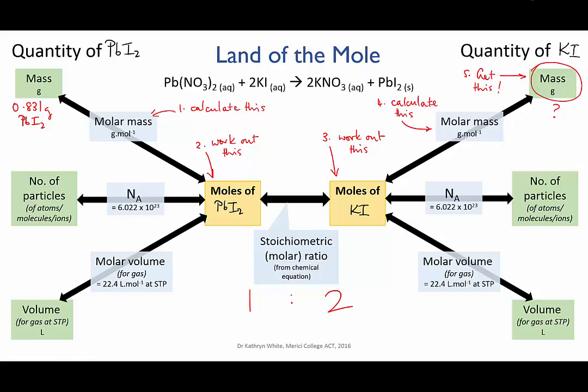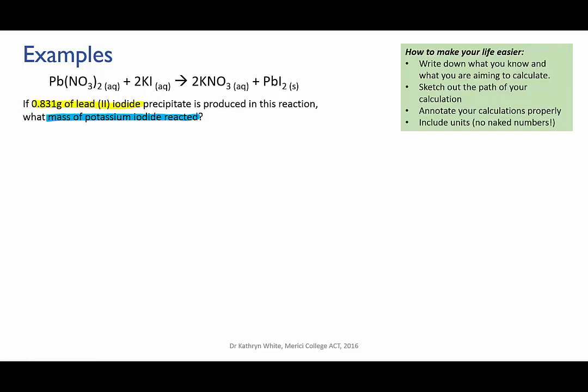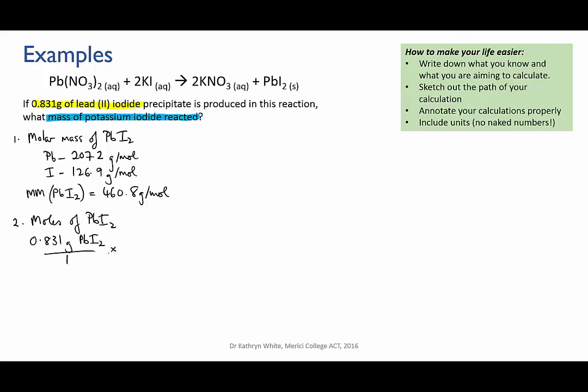You might like to pause the video now and see if you can work through those calculations yourself. So let's work through those steps. First we'll calculate the molar mass of lead iodide. Look the information up on the periodic table. Lead is 207.2 grams per mole and iodine is 126.9 grams per mole. So the molar mass you should get is 460.8 grams per mole for PbI2. Now let's use this to calculate the moles of lead iodide. So we take 0.831 grams of lead iodide, put it over one and divide by the molar mass. Remember that dividing is the same as multiplying by the inverse. So that puts the grams on the bottom and allows us to cancel those units out. And this calculation gives us 0.0018304 moles of lead iodide.